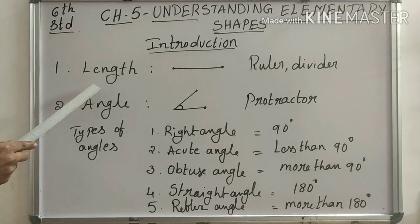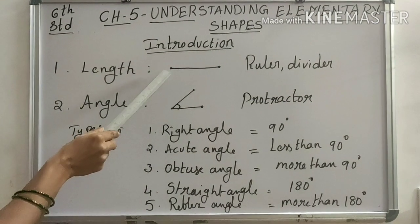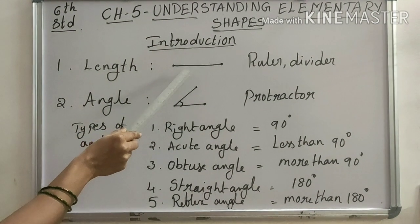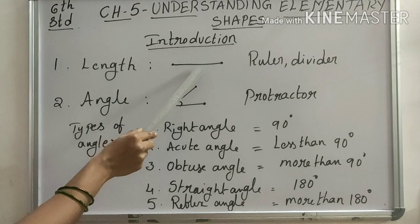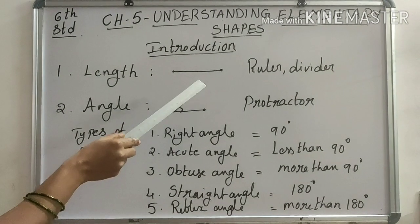First one is length. What is length? This is a line segment. We can measure the distance of this line segment by using ruler and divider.